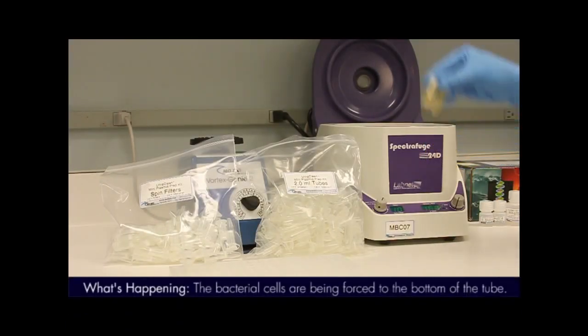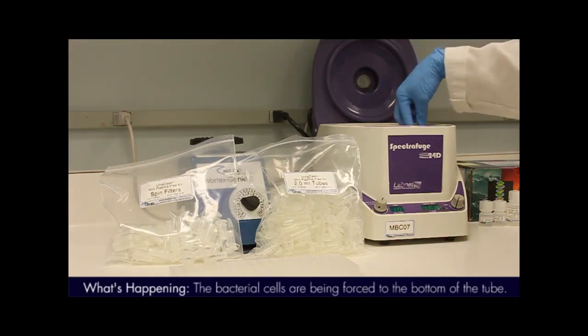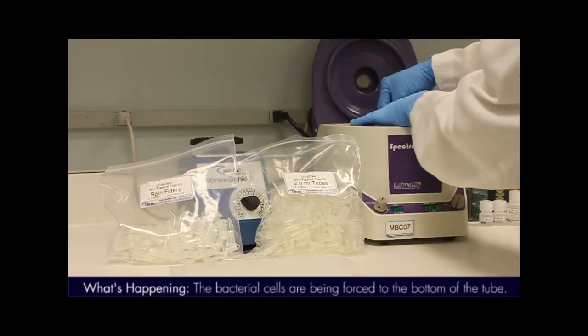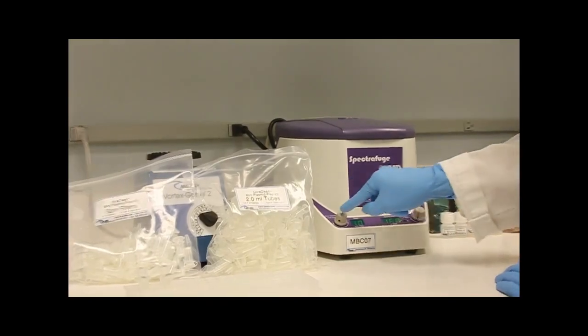Each plasmid prep will require a set of two 2 mL collection tubes and one spin filter unit. Add a maximum of 2 mLs of culture to the first tube in each set and centrifuge at 16,000 times G for one minute.